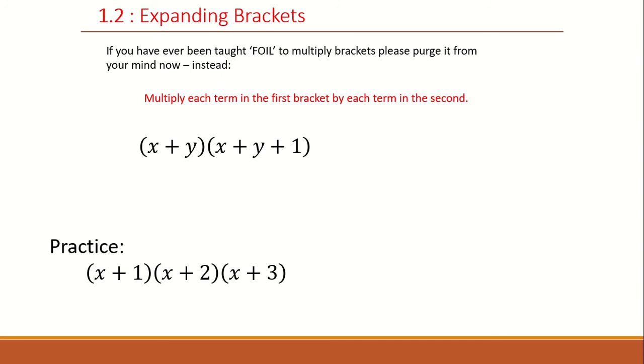Instead of using the FOIL method, we'll use the method written on the screen, which is to multiply each term in the first bracket by each term in the second. For example, take this question in front of us. We'll take the first term, which is x, multiply it by the first term in the second bracket, which is another x, to get x squared.